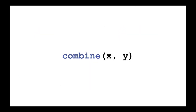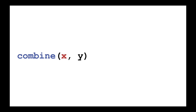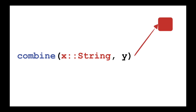A lot of languages allow you to have a custom function called combine, or something like it, where we want to tailor our implementation based on the type of X. In Elixir this is called a protocol, and in Java this is called an interface. The idea is that X could have some type, and we may have one implementation for String and another for Number.